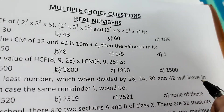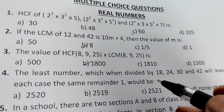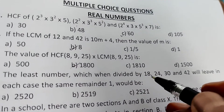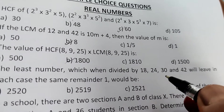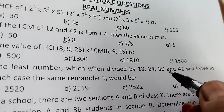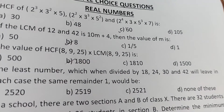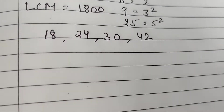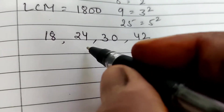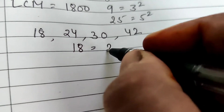Question 4: The least number which when divided by 18, 24, 30, and 42 leaves the same remainder 1 in each case. Least number means we first find the LCM of 18, 24, 30, and 42. We can use prime factorization.